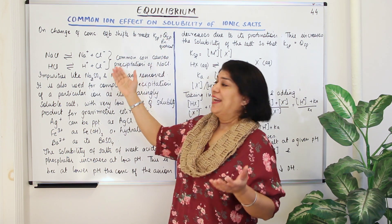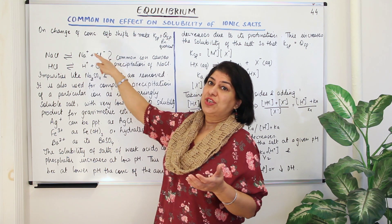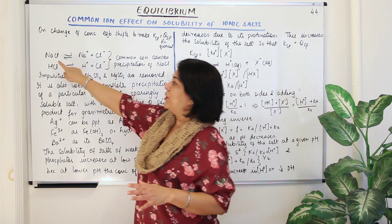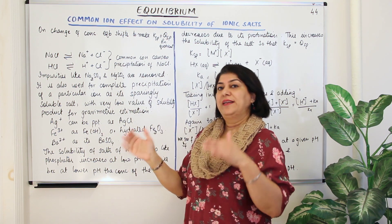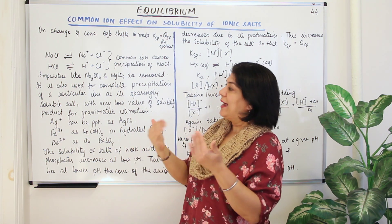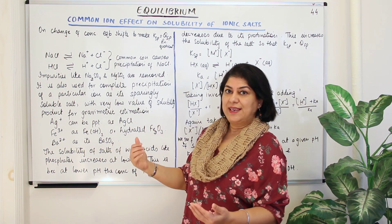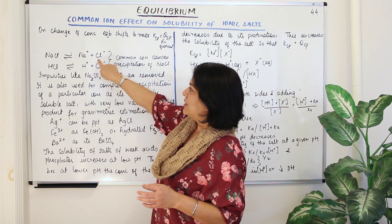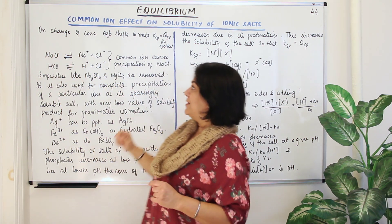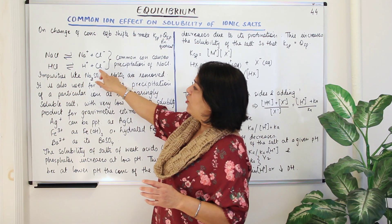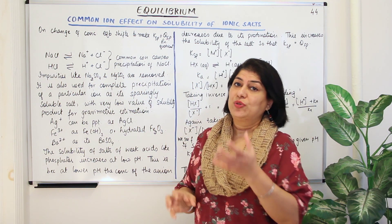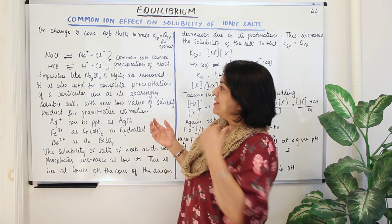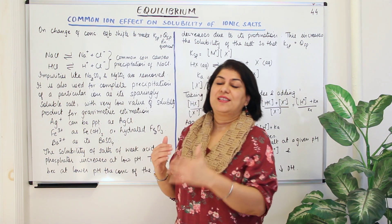The concentrations are different and therefore the ratio of the concentrations of the ions changes. For example, sodium chloride dissociates into sodium ion and chloride ion at equilibrium, and you add HCl to this. HCl dissociates into H⁺ and Cl⁻ where Cl⁻ is the common ion. The concentration of chloride ion increases and therefore Ksp now becomes Qsp, and the reaction starts proceeding in the direction which nullifies the effect of the change.